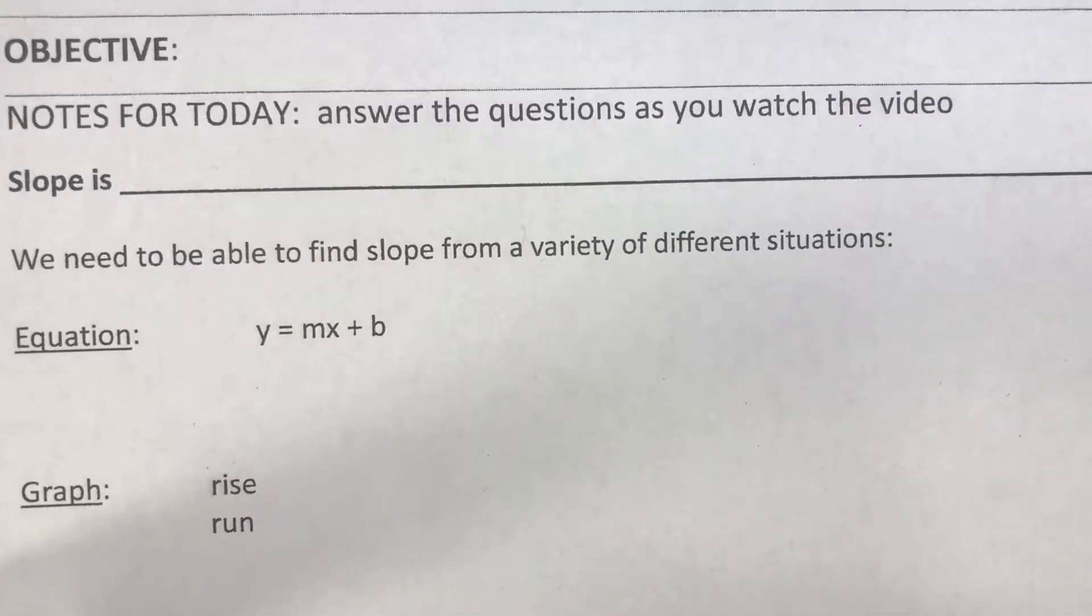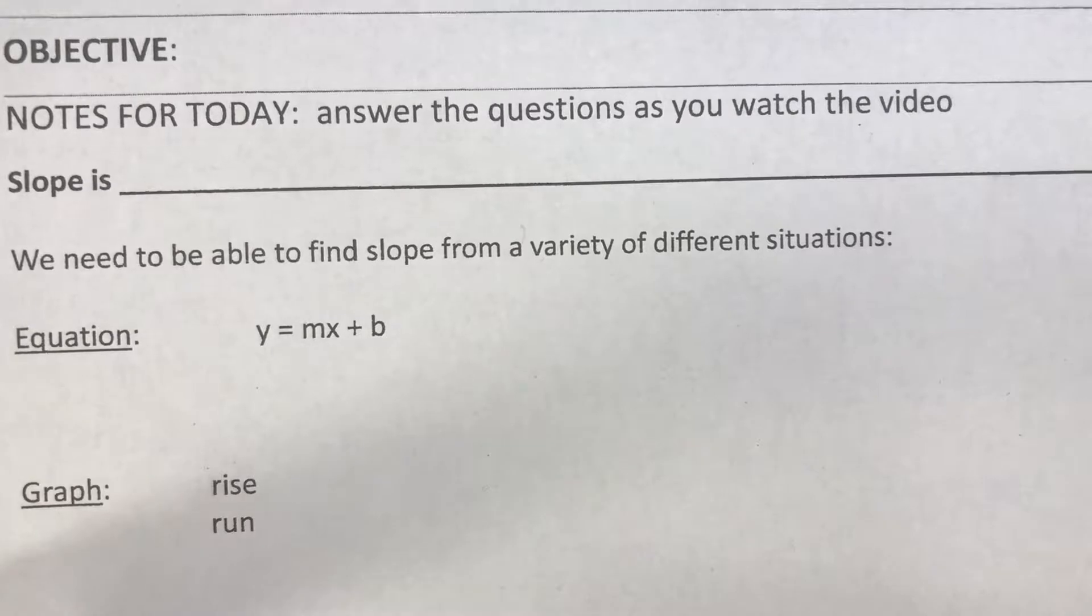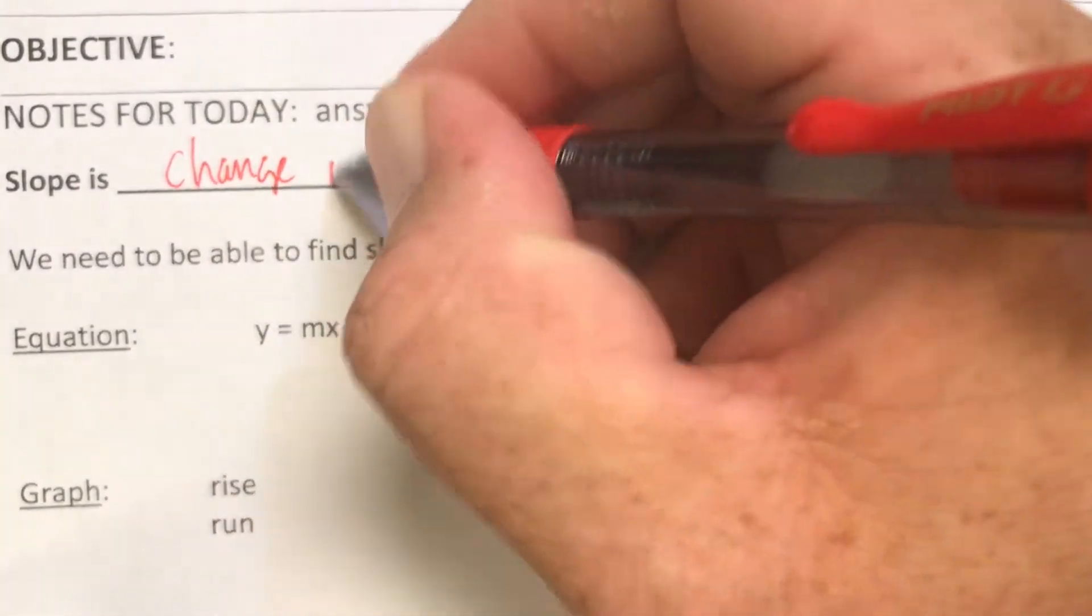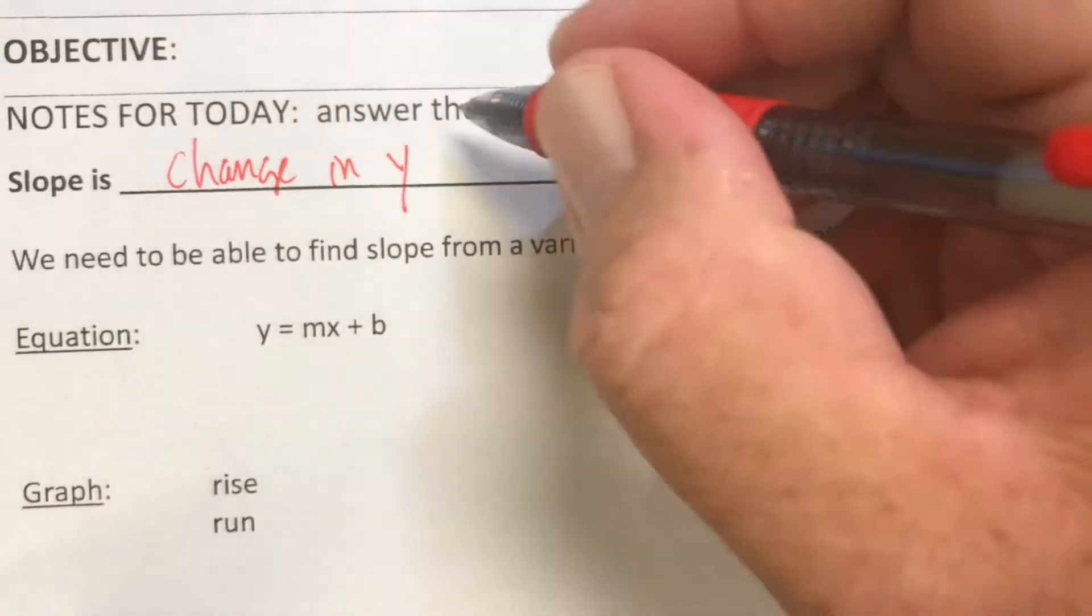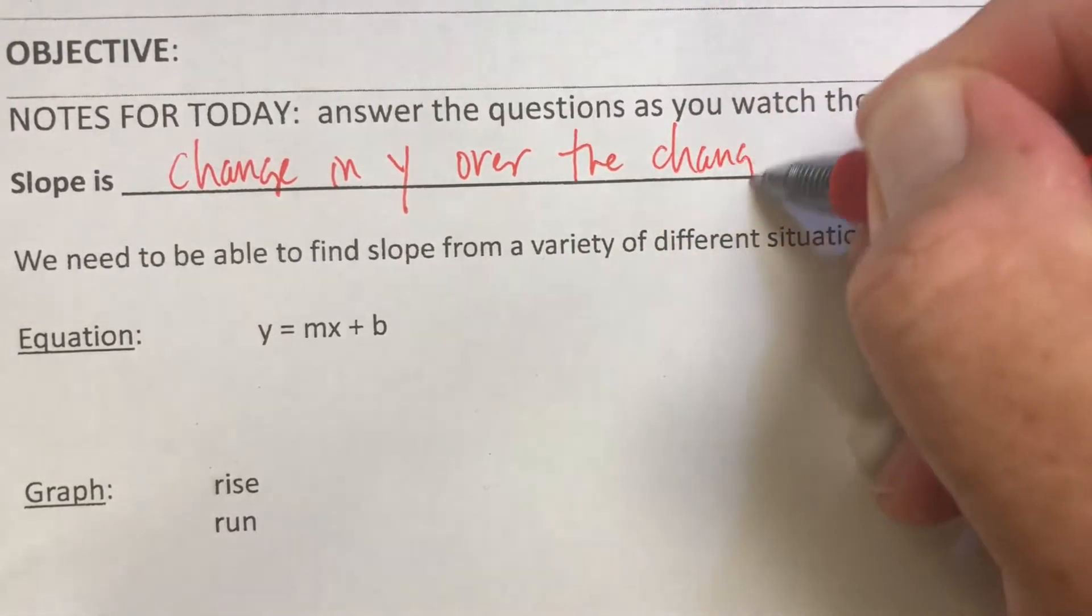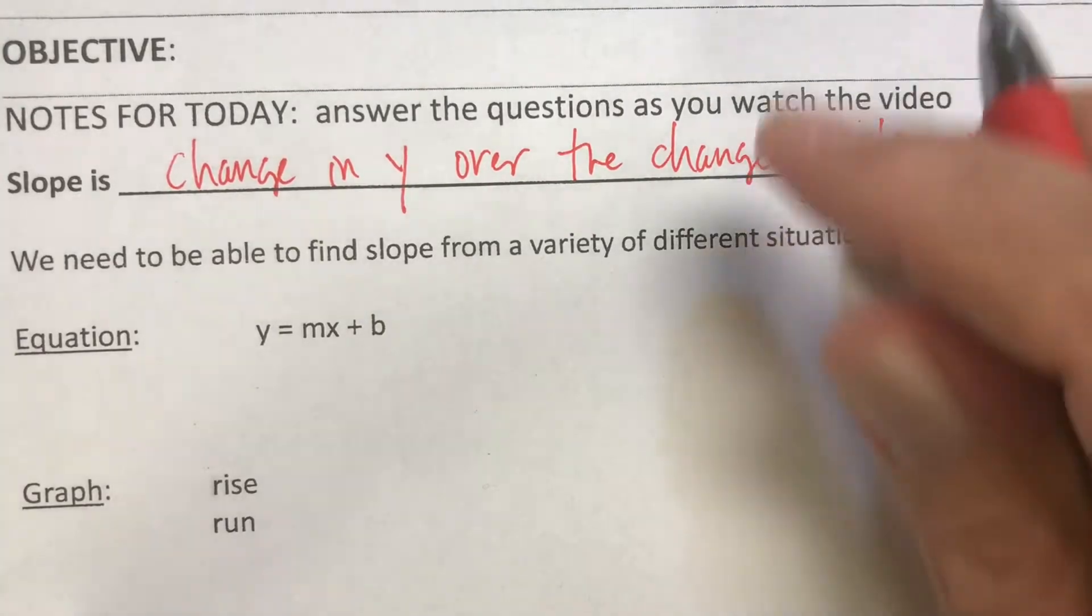Today we will start talking about slope. Slope is something you've talked about before in middle school, but today we're going to go over it real quick before we move on to our next topic. So what is slope? Slope is the change in y over the change in x. It's a ratio: change in the y values over the change in the x values.